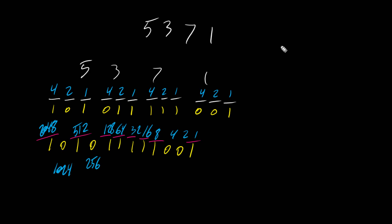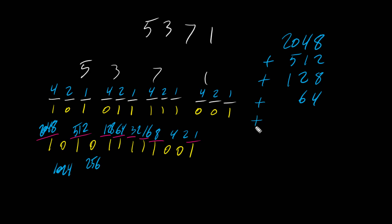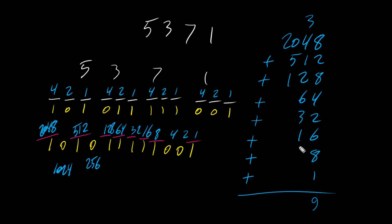Let's add these numbers together: 2048 plus 512 plus 128 plus 64 plus 32 plus 16 plus 8 plus 1. That gives us 2809. So the octal number 5371 is equivalent to the decimal number 2809.